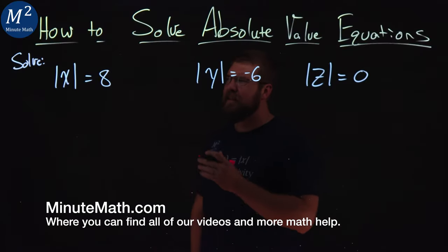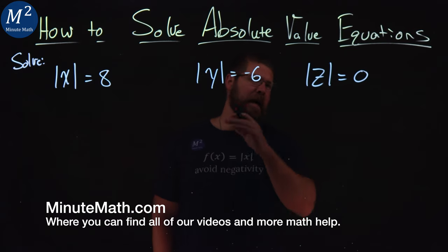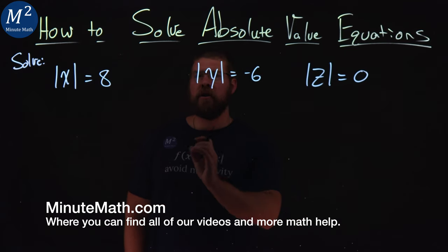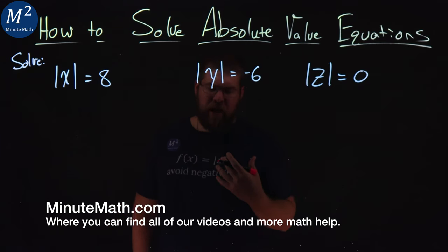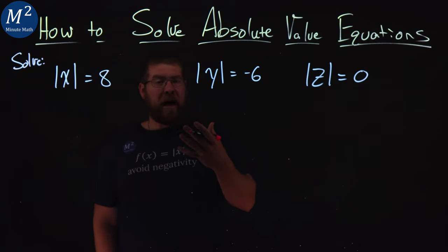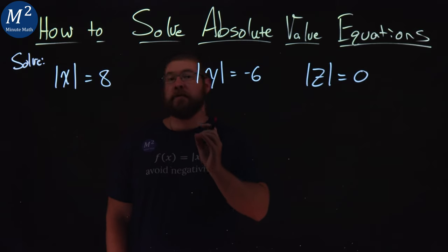We're given three problems here that are basic absolute value equations to help us better understand what to do. The absolute value of a value is the distance that value is from zero.